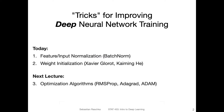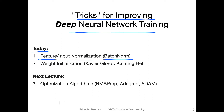Alright, just to recap — today we are talking about tricks for improving deep neural network training. In particular, we will talk about feature and input normalization, and focus on a topic called batch norm. I will also talk about weight initialization schemes, specifically the Xavier Glorot initialization scheme and the Kaiming He initialization scheme. And then in the next lecture, we will talk about optimization algorithms for improving gradient descent learning, for instance, RMSprop, and Adam, and I will also provide you with a list of many more algorithms.